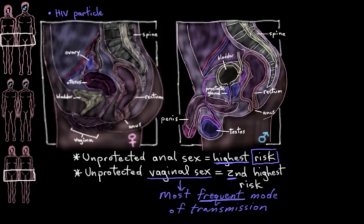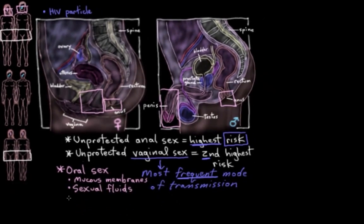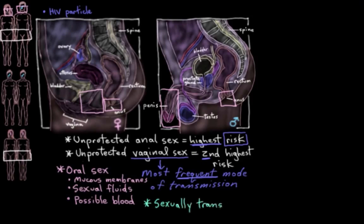Oral sex of any kind — using the mouth to stimulate the penis, the vagina, or the anus — carries a risk of transmitting HIV, because mucous membranes of the mouth are exposed to sexual fluids, and the mucous membranes of the penis, vagina, or anus can be exposed to blood. Having untreated sexually transmitted infections like chlamydia, syphilis, or herpes vastly increases your risk, because you're more likely to have breaks in your skin or mucosal surfaces from sores or ulcers, through which HIV can more easily infect you.